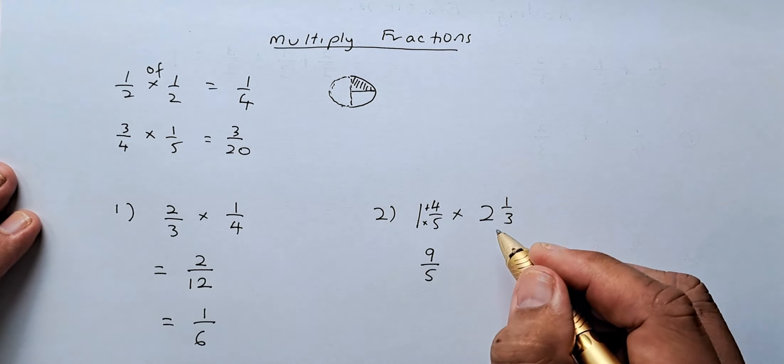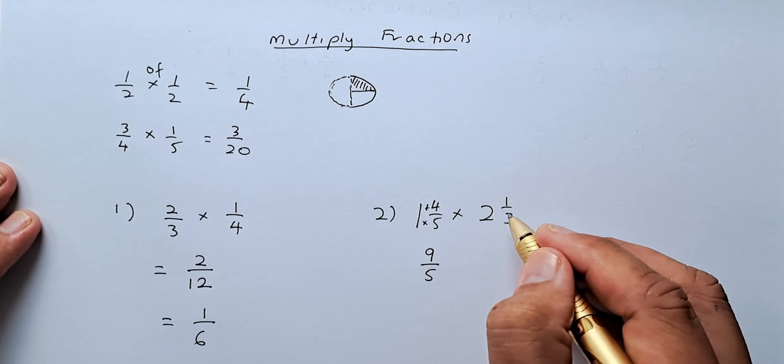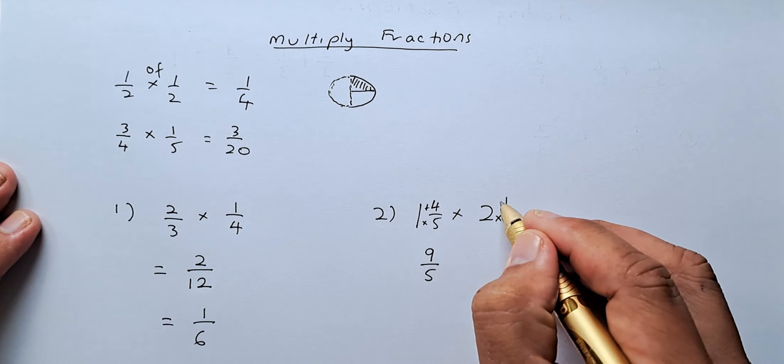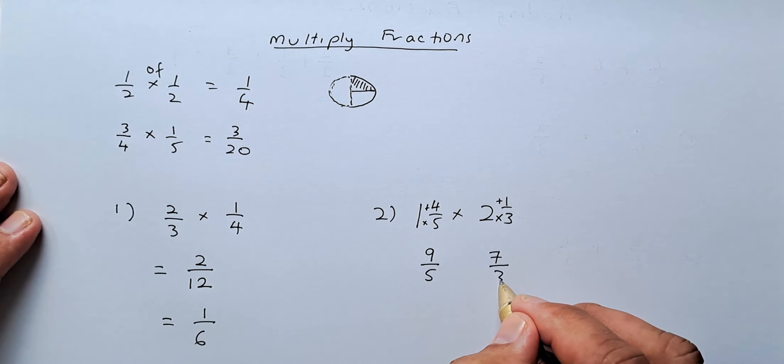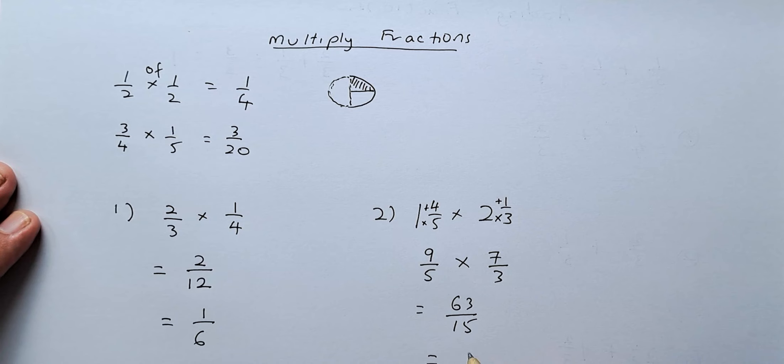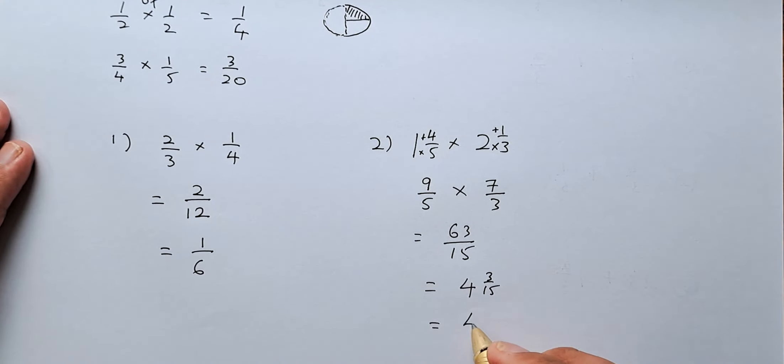And then for the second fraction, 2 and 1 third, you just take 2 times 3, which is 6 plus 1. So that will be 7 over 3. You're going to multiply them. 9 times 7 is going to be 63 out of 15, and you need to simplify them. 4 times 15 is 60. It's 3 over 15. You can simplify further. It's going to be 4 and 1 fifth.